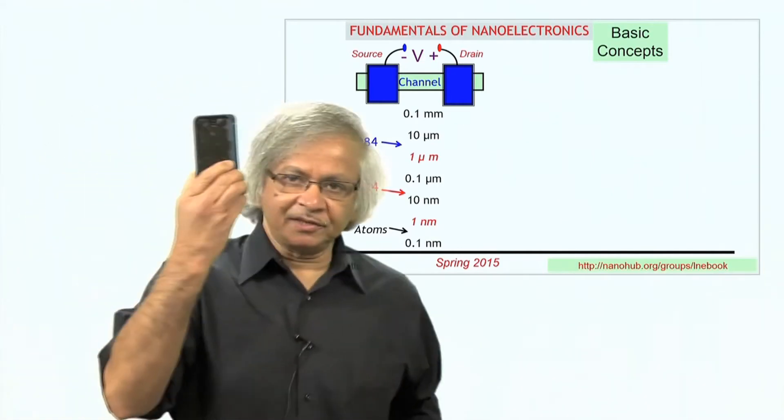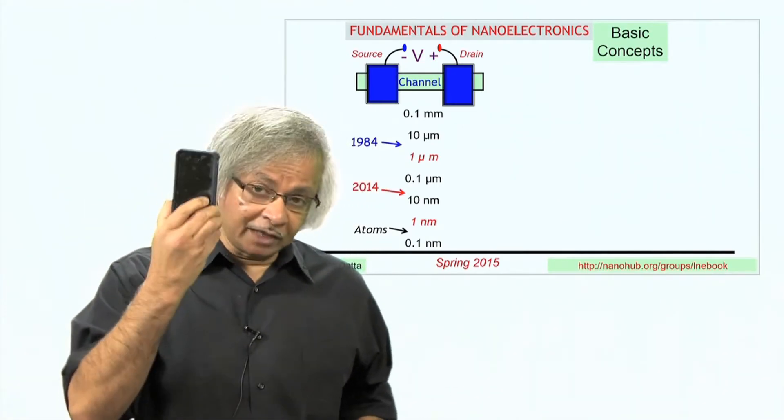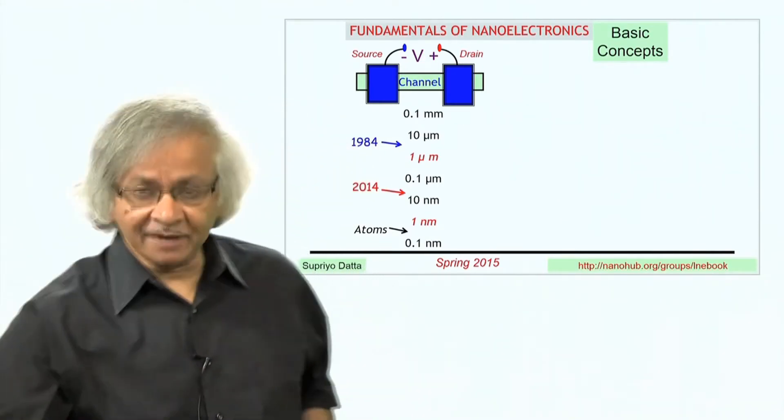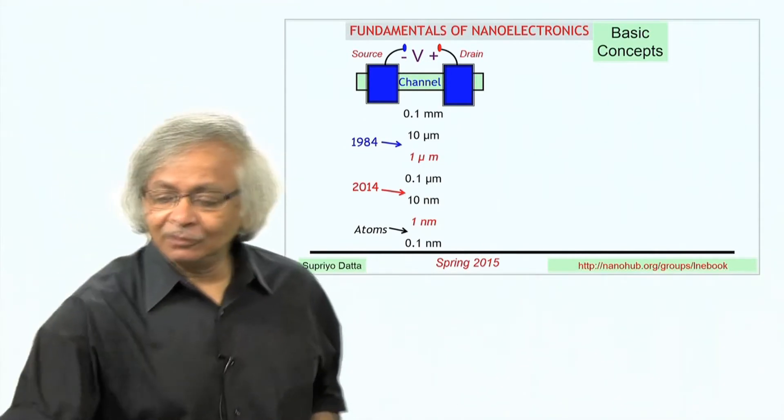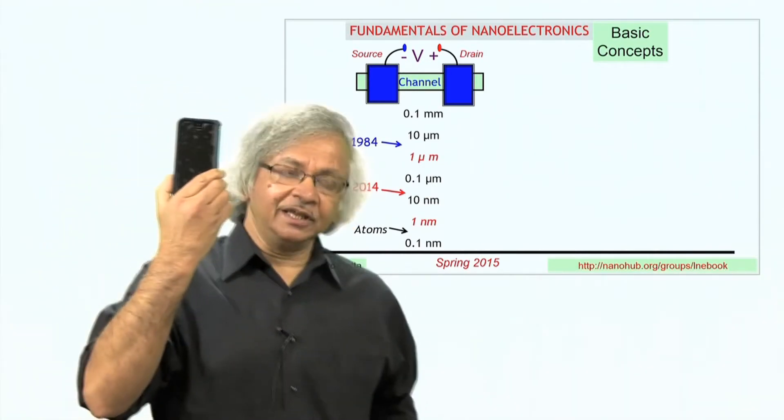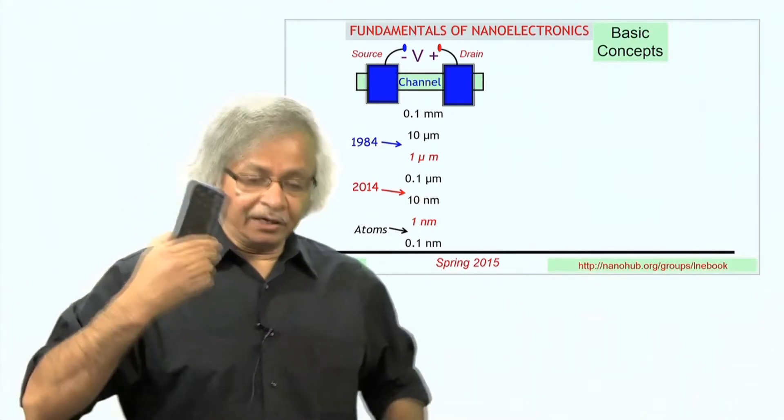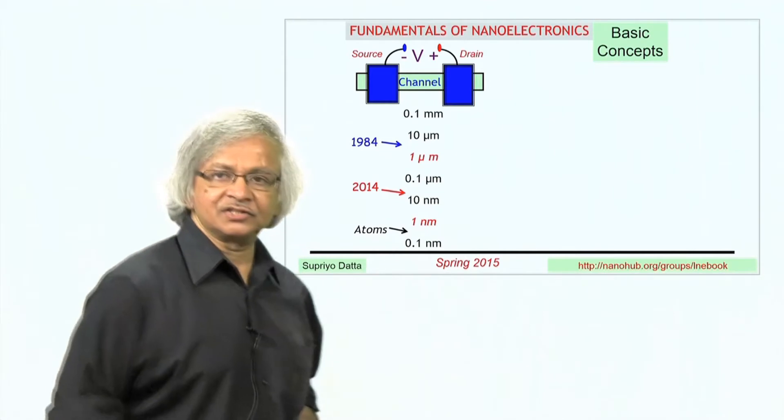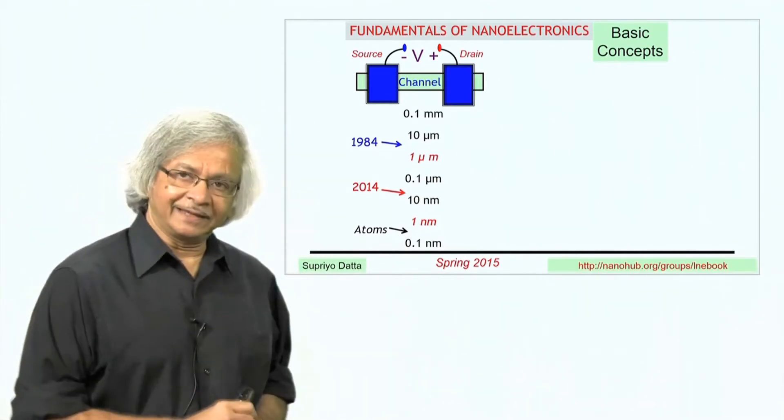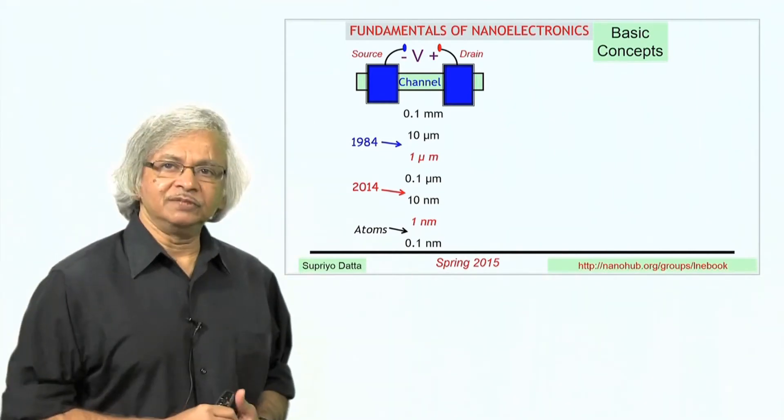Today's smartphones are just amazing things, and what allows them to do all these amazing things is that one of these actually contains over a billion transistors. And the reason you can pack a billion transistors into a small thing like that is that each one is extremely small.